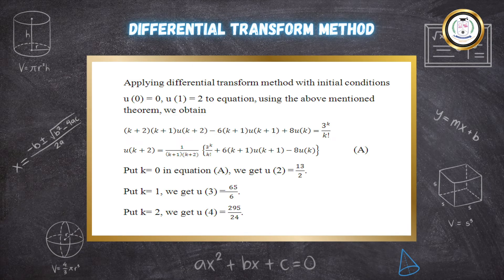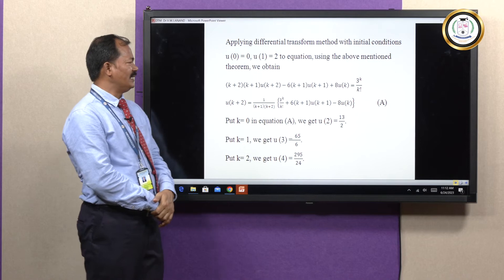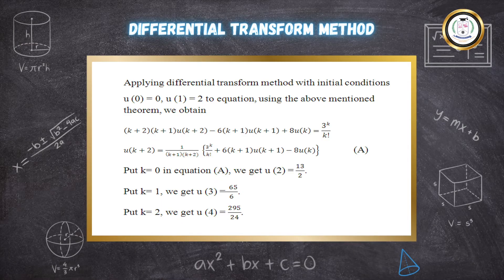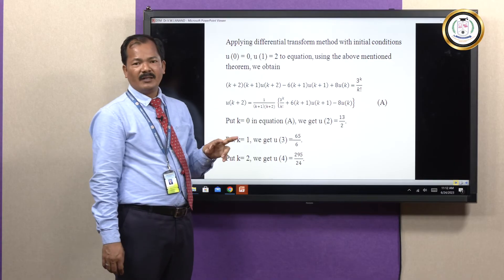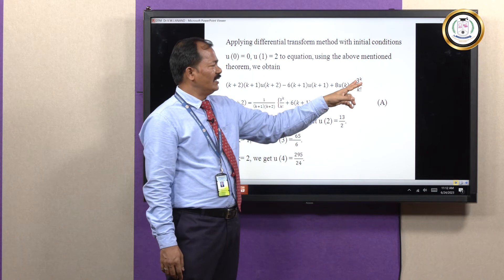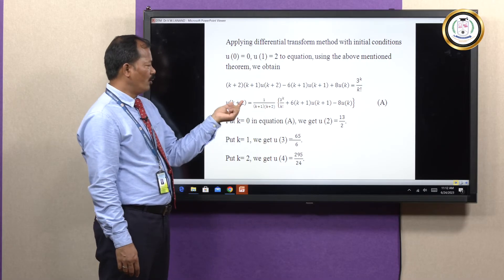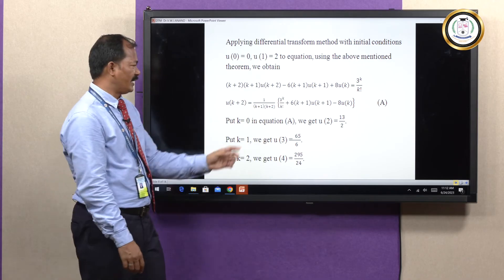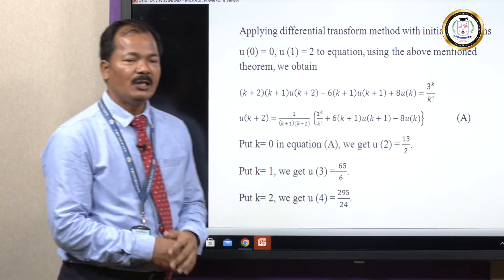Now we solve this by the DTM. The first term d-squared x upon dt-squared transforms to k plus 2 times k plus 1 times U of k plus 2. The second term minus 6 dx upon dt transforms to minus 6 times k plus 1 times U of k plus 1. Adding 8 times U of k equals 3 to the power k upon k factorial, since the right-hand side e to the power 3t transforms using Theorem 3 as a to the power k upon k factorial with a equals 3. Rearranging, the recurrence relation is U of k plus 2 equals 1 over (k plus 1)(k plus 2), times [3 to the power k upon k factorial plus 6(k plus 1) U of k plus 1 minus 8 U of k]. We call this equation A.